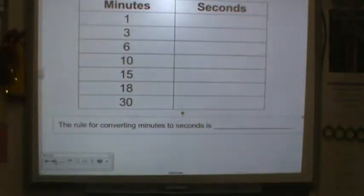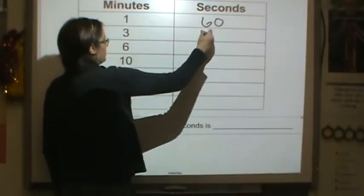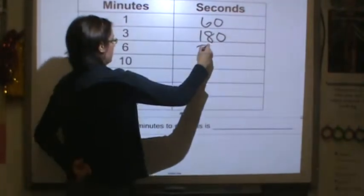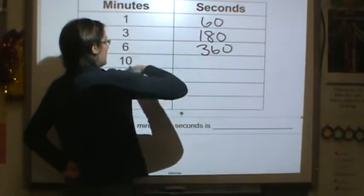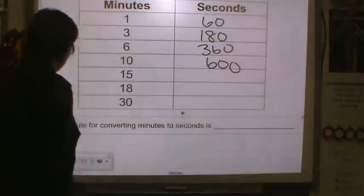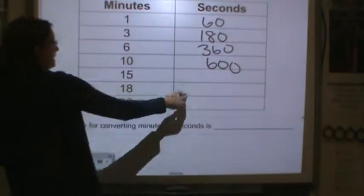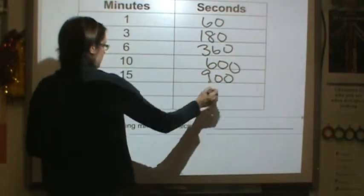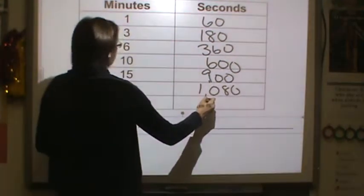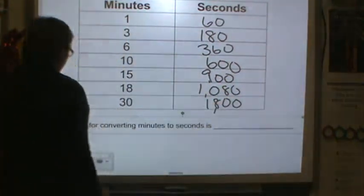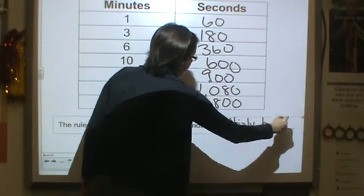Minutes to seconds. 1 minute, 60 seconds. 3 minutes, 180 seconds. 6 minutes, 360 seconds. 10 minutes, 600 seconds. This should be looking familiar to you. 15 minutes would be 900 seconds. 1,080 and then 1,800. So converting minutes to seconds is multiply by 60.